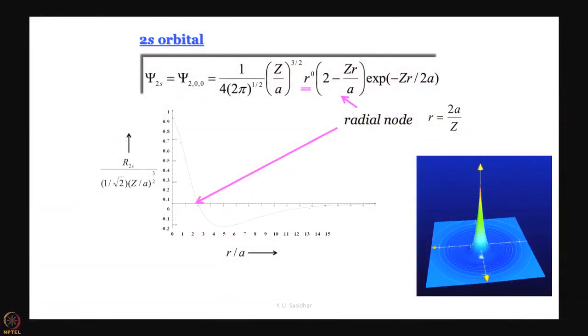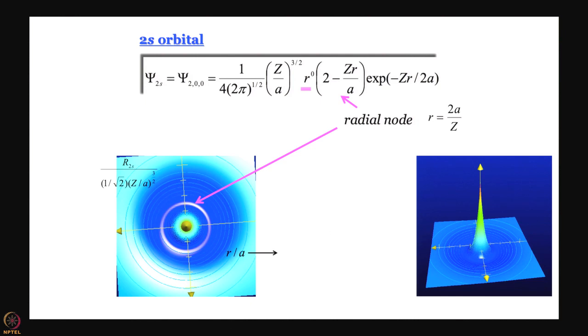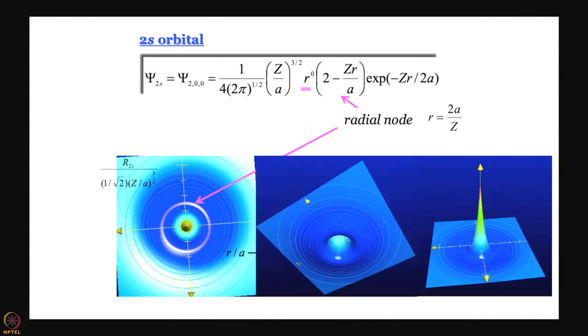Please do not forget that this vertical axis is the wave function — nothing else, the wave function. From there you can generate this contour diagram, and what you see in white here is really the radial node where r is equal to 2a divided by z. We also gave you this kind of a view — if you look from the bottom you see these contours and you can see this big peak that is there inside.